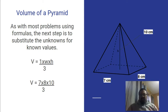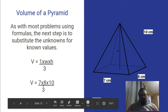As with most problems, we have a bunch of unknowns. Our first step is to substitute the unknowns with our knowns. One side is 7, one side is 8, the height is 10. We substitute that in, and then easy peasy, we do the math.